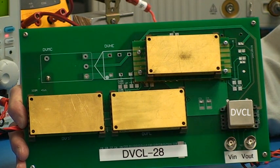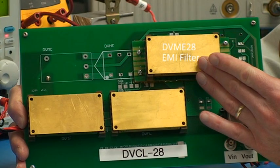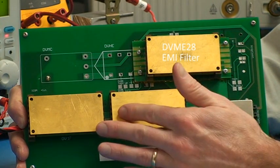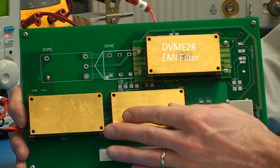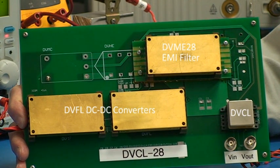It controls the Inrush Current drawn by EMI filters, such as this DVME28, DC-DC converters, such as these DVFLs, and added input capacitors during the system startup.